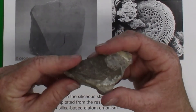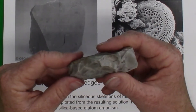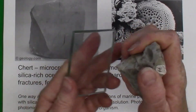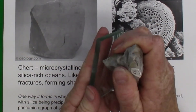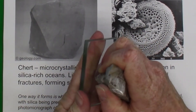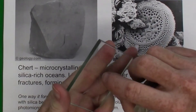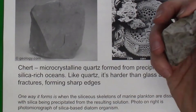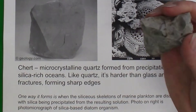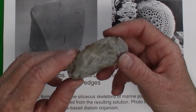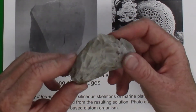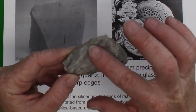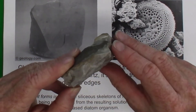Quartz is non-reactive to acid and is harder than glass. Using the hardness test with glass — which has a hardness of 5.5 — we can see that chert easily produces a scratch in the glass. Quartz also breaks without cleavage, exhibiting conchoidal fracture, which leaves curved surfaces and sharp edges.